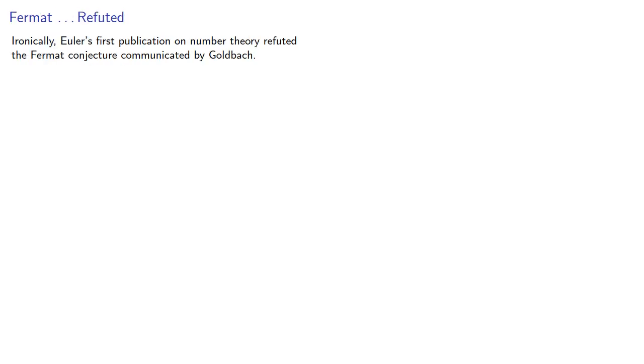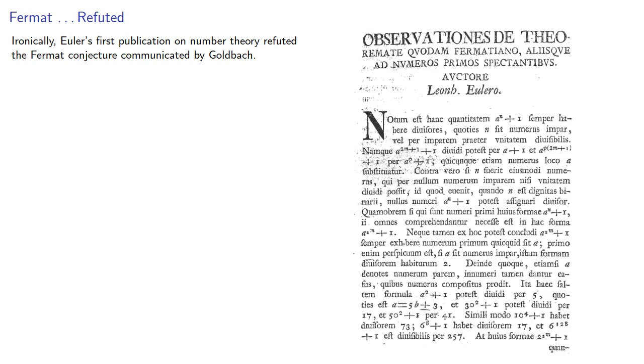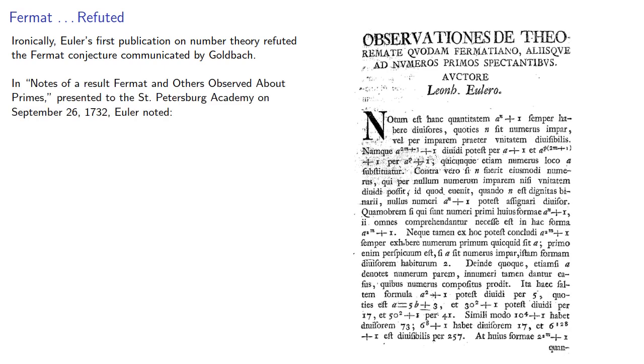Ironically, for the person who would make Fermat synonymous with the foundation of number theory, Euler's first publication refuted the Fermat conjecture communicated by Goldbach. In Notes of a Result Fermat and Others Observed About Primes, presented to the St. Petersburg Academy on September 26, 1732, Euler noted: